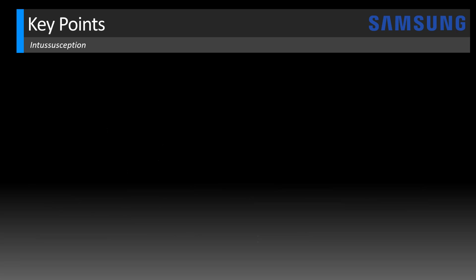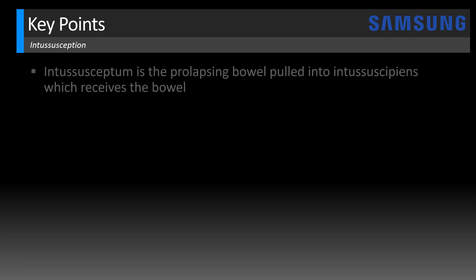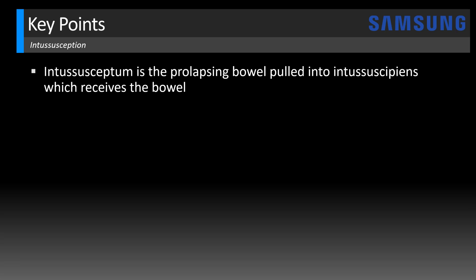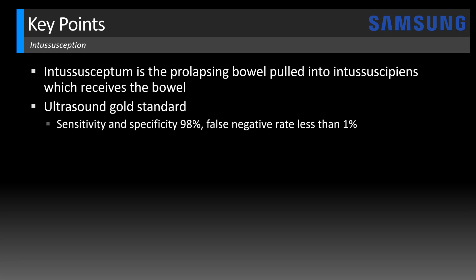Some vocabulary — and don't worry, there won't be a spelling test. The intussusceptum is the name of the prolapsing bowel that's pulled into the intussuscipiens, which receives the bowel. For an ileocolic intussusception, the ileum is the intussusceptum and the colon is the intussuscipiens. In the workup of intussusception, ultrasound is typically considered the gold standard because the sensitivity and specificity are quite high at 98%, and the false negative rate is extremely low — less than 1% — meaning a negative ultrasound is quite reassuring.